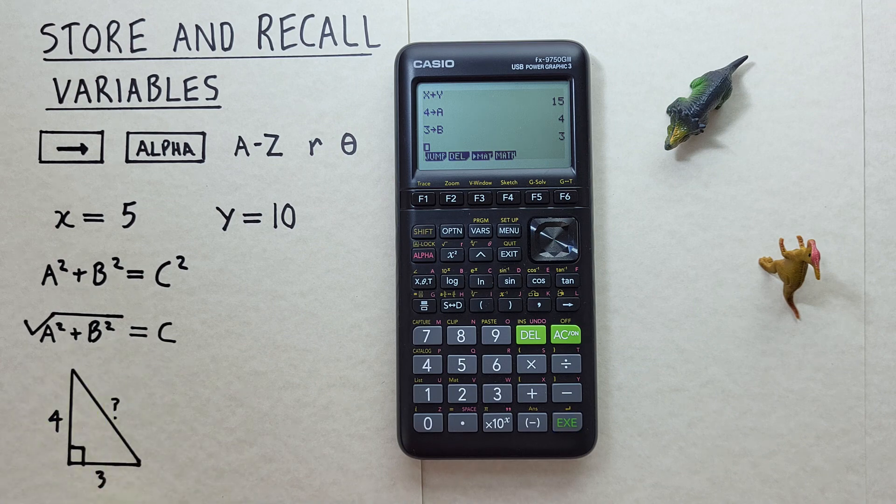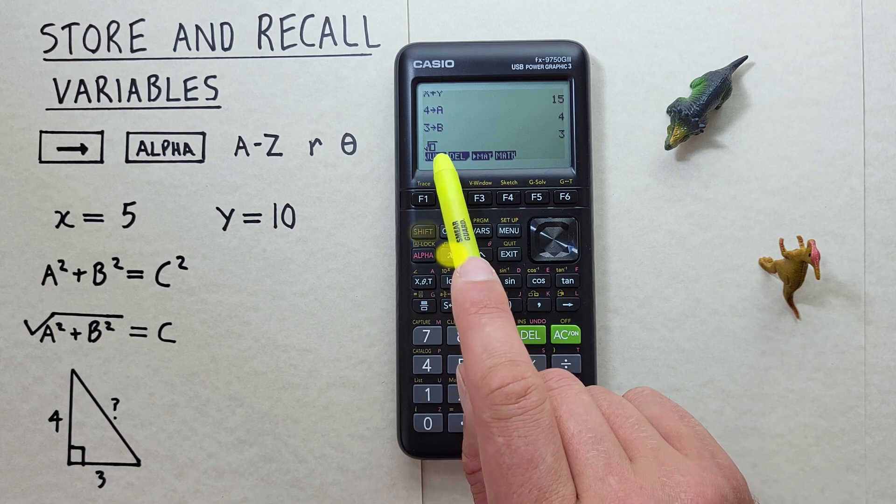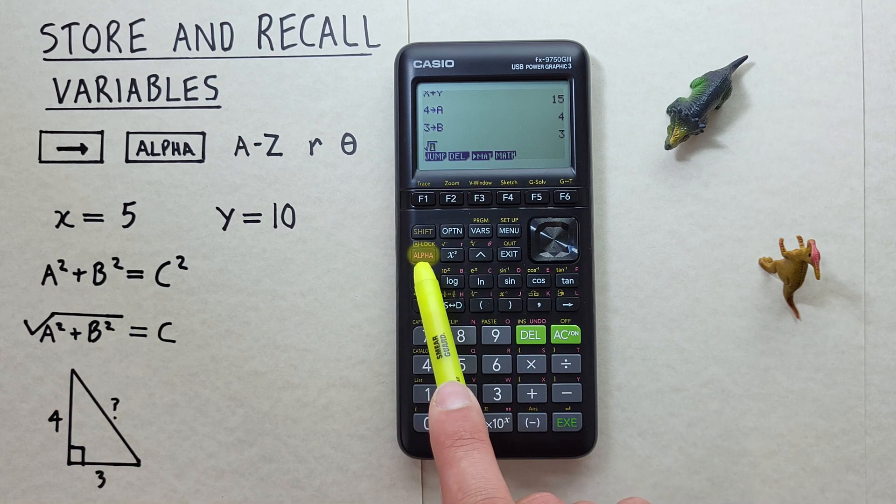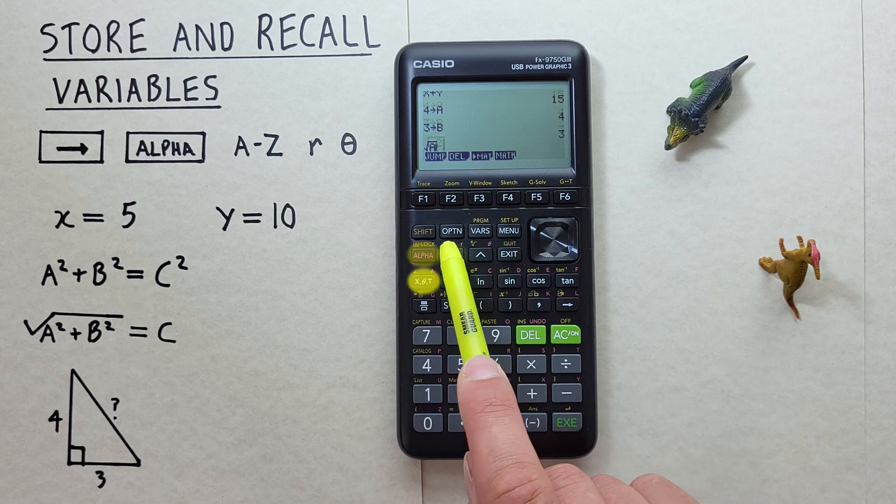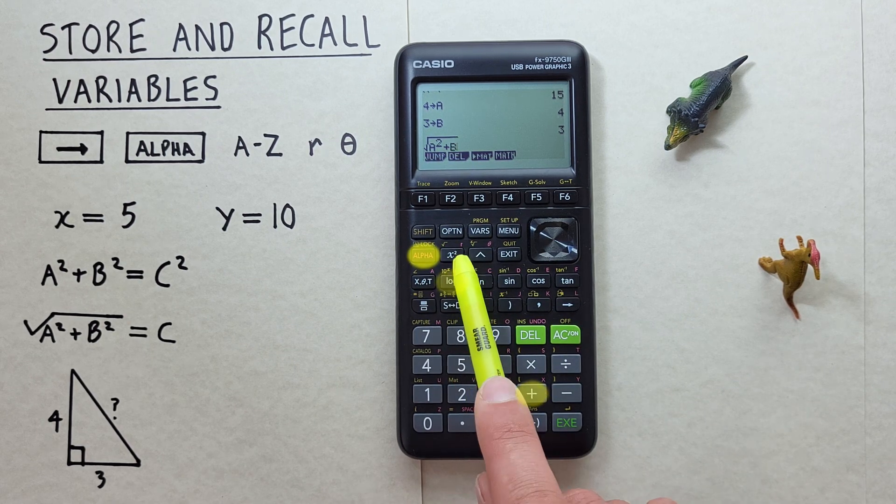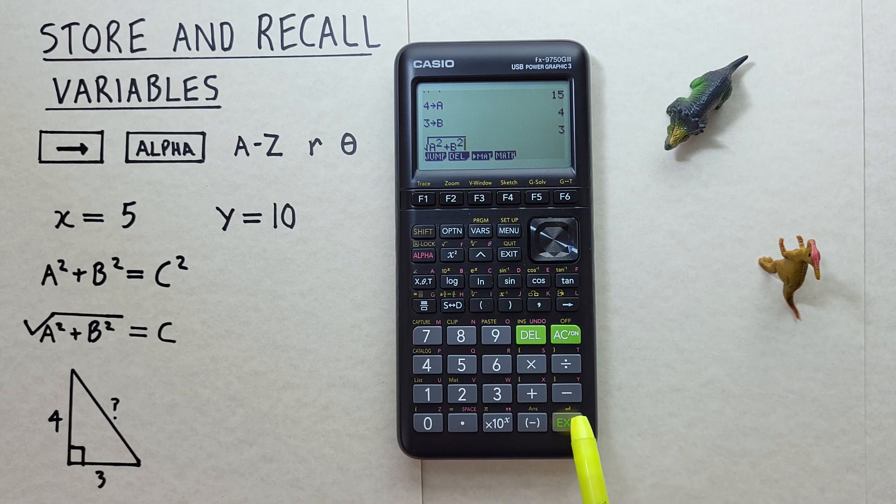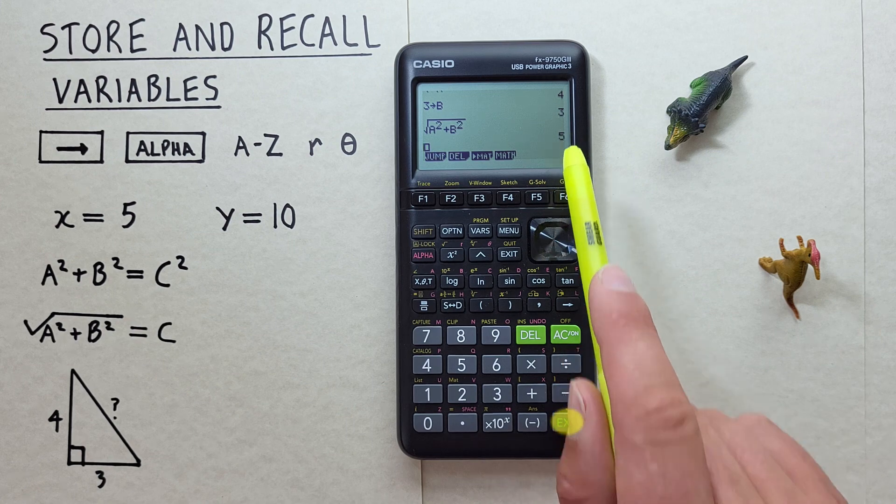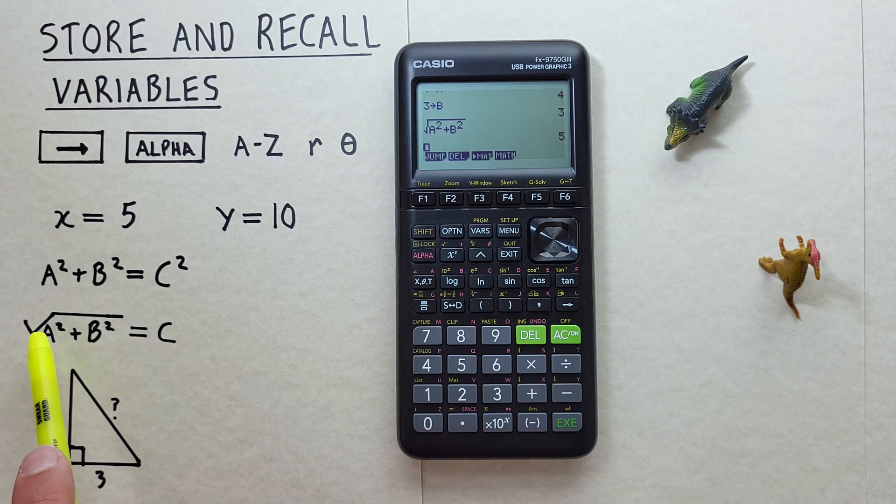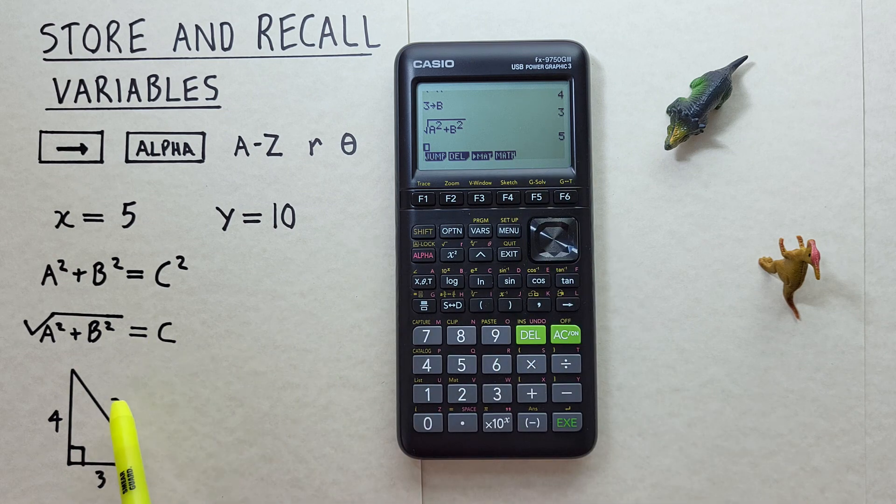Now we have our two variables, we can plug them into our equation. So if we go shift square root, there's our square root, A squared, alpha A squared plus alpha B squared, equals 5. So the square root of A squared plus B squared equals C, and C is 5. So that's the side we're looking for.